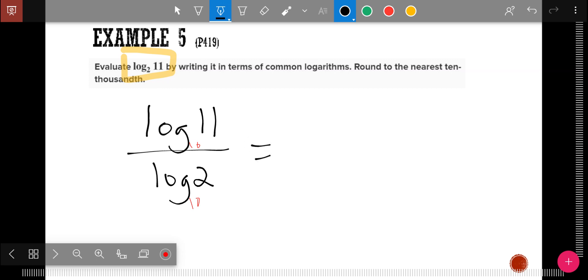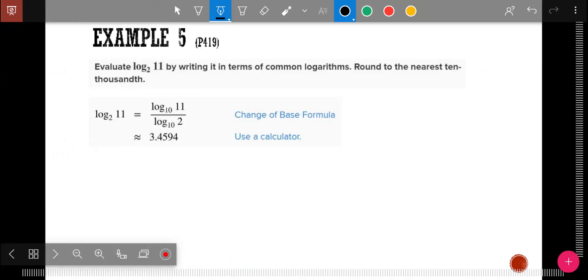And so now take your calculator. What do we get? Again, they're asking nearest ten-thousandth, which is four decimal places. So I'm going to round it to 3.4594. Again, I left the book's work because it's a little bit neater. It uses the words on what we did.